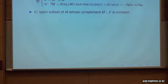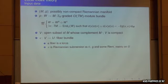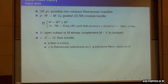The third input datum is V, a subset of M whose complement is compact. And P is a fiber bundle from V to some manifold U, such that the fiber is a torus and P is a Riemannian submersion with respect to the restriction of G to V.